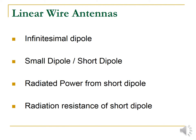There are different types of linear wire antennas. First is the infinitesimal dipole, then small dipole, short dipole, radiated power from short dipole, and radiated resistance from short dipole. These are the four different types of linear wire antennas.